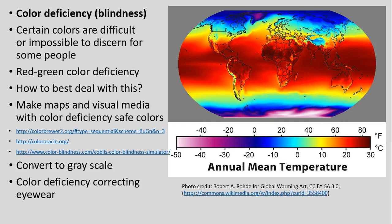To wrap up, I want to raise one other point in relation to the annual mean temperature map: color deficiency, often termed color blindness. Certain colors can be very difficult or impossible to discern for some portion of the population. The most common type is red-green color deficiency, where it's difficult to discern between red and green colors. On a map set up like this one, it might be difficult to discern certain colors or shades of those colors.